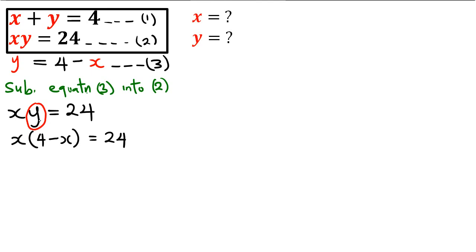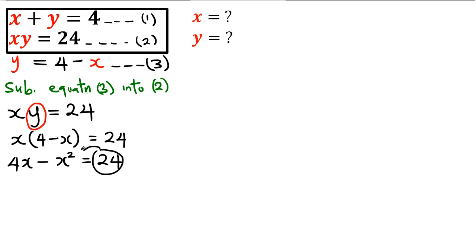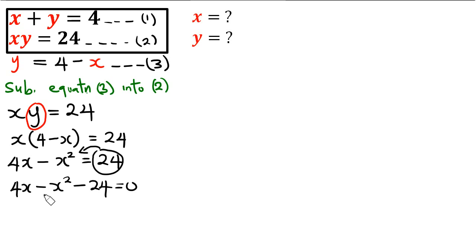By expansion, we're going to have 4x minus x squared, still equal to 24. Bringing everything to one side, we have 4x minus x squared minus 24 equals 0. This is actually a quadratic equation, so we can rearrange it.